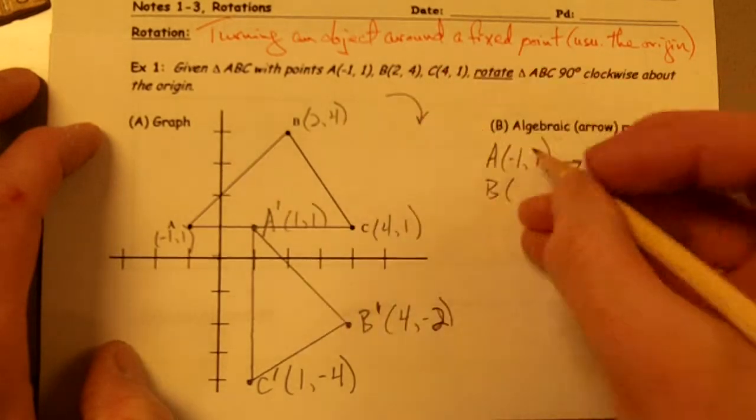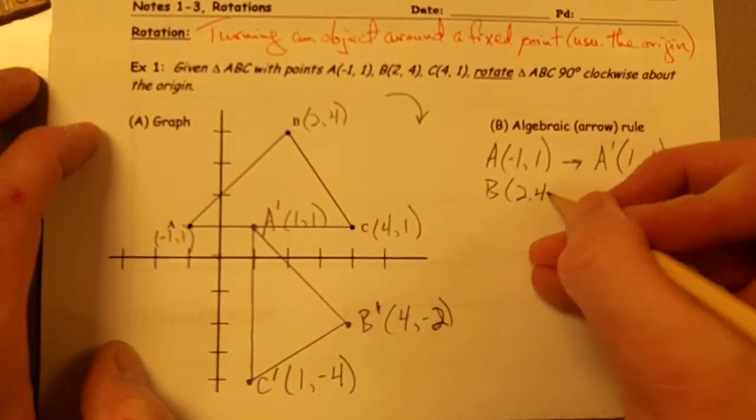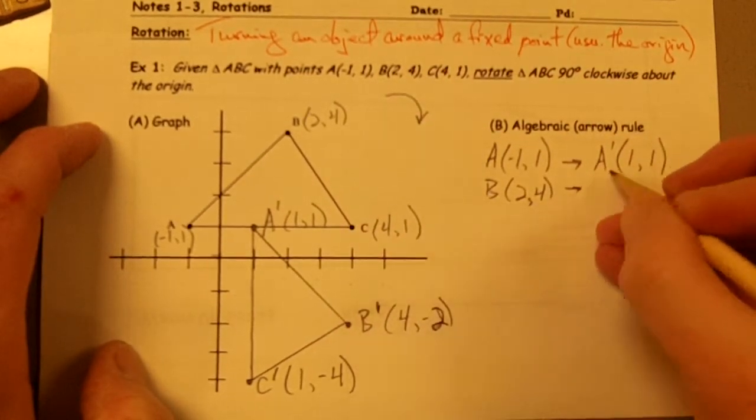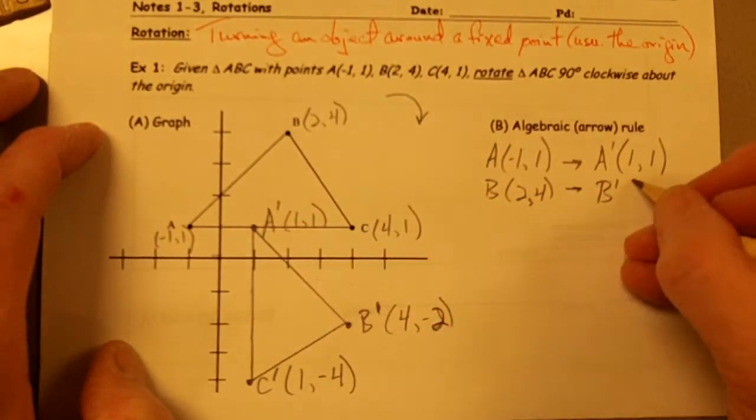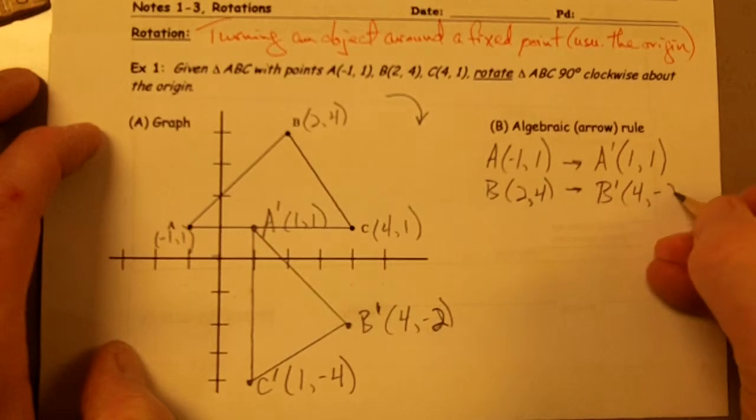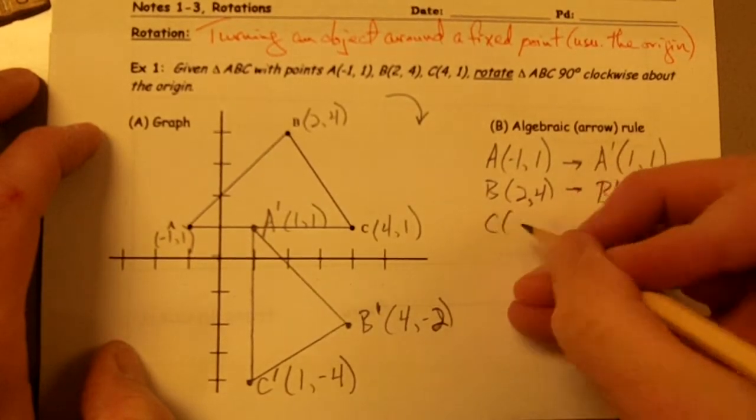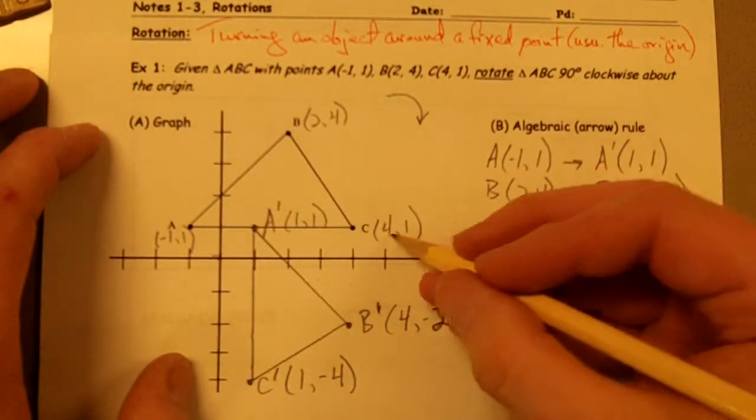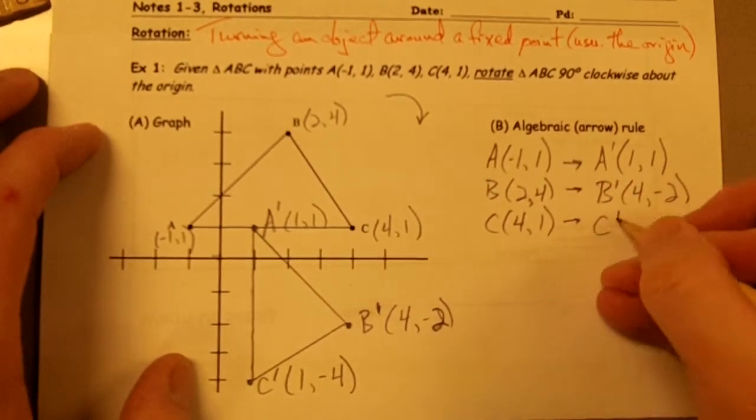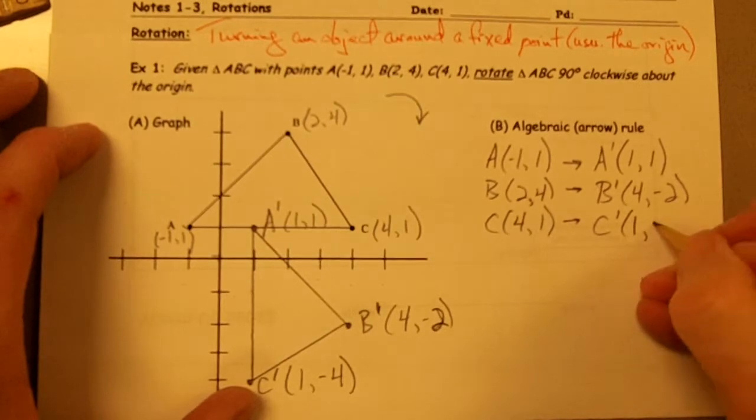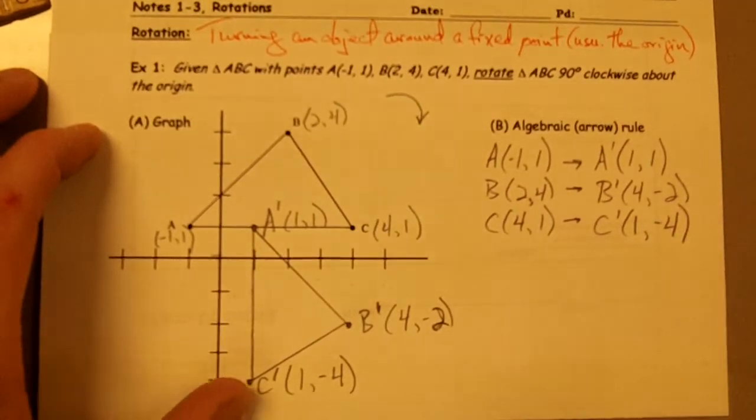Point B was (2, 4) and it became B prime which is (4, -2). And C, (4, 1), became C prime which is (1, -4).